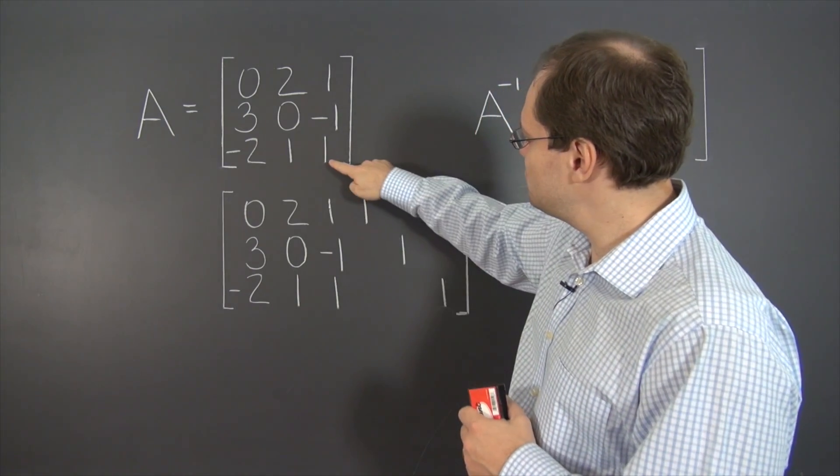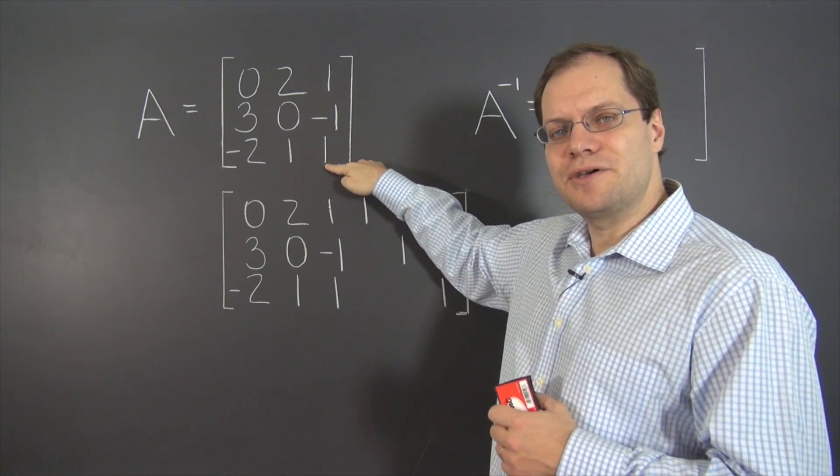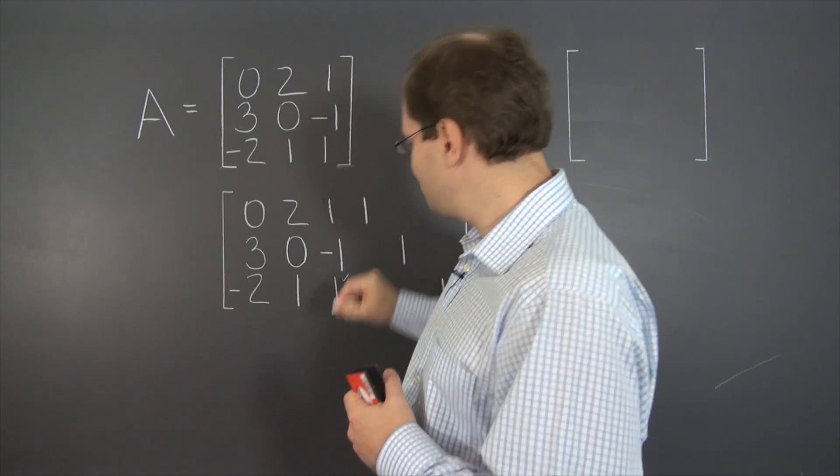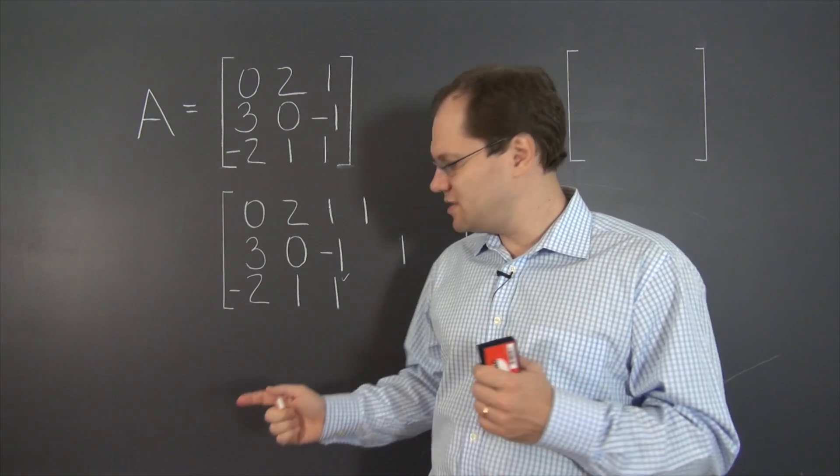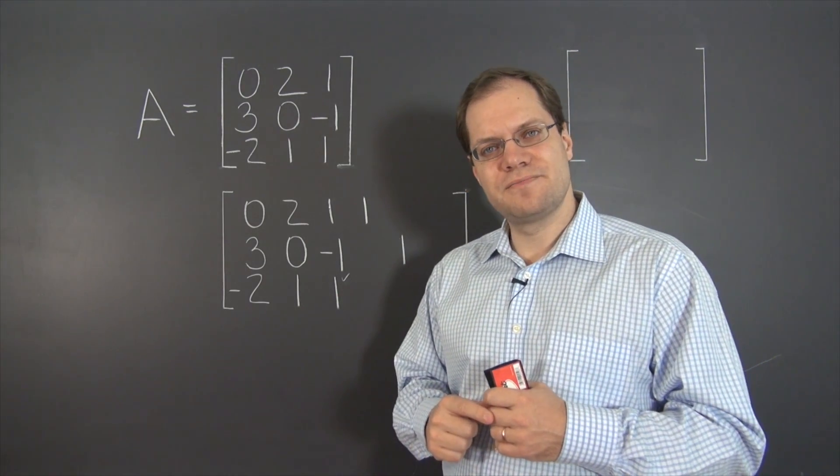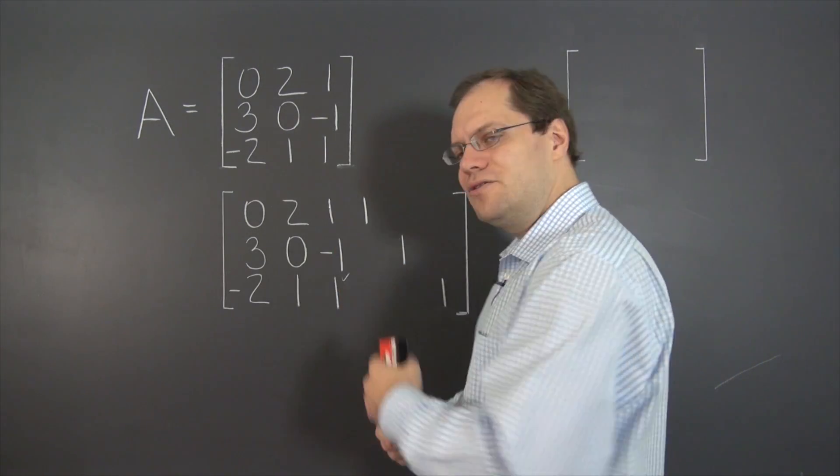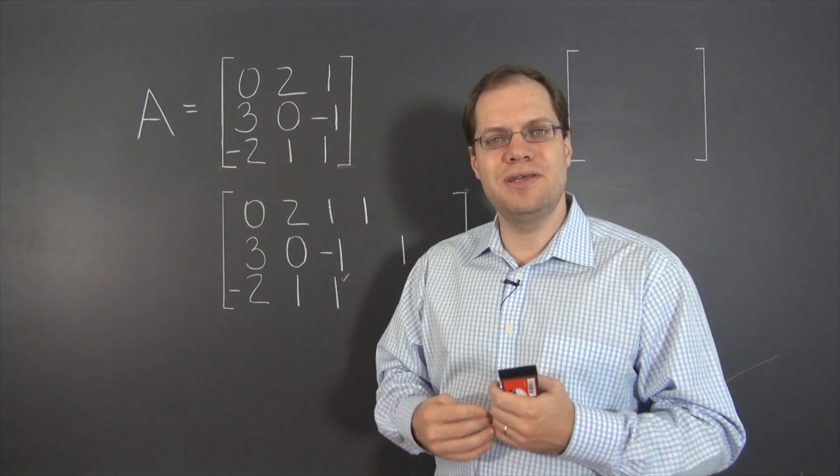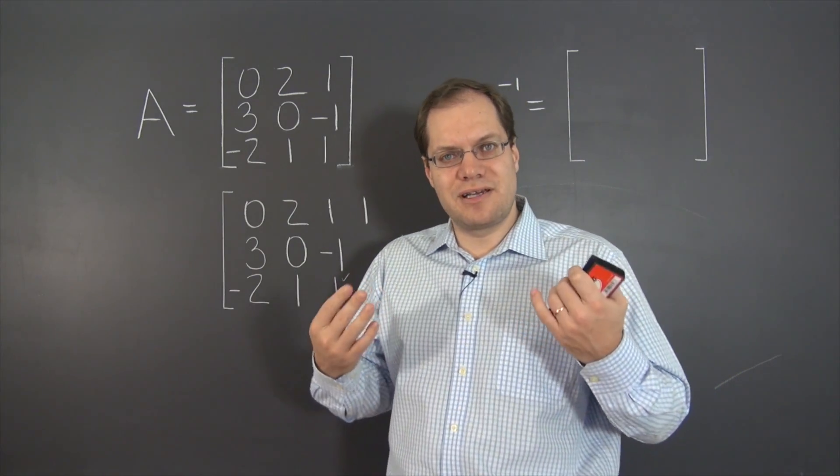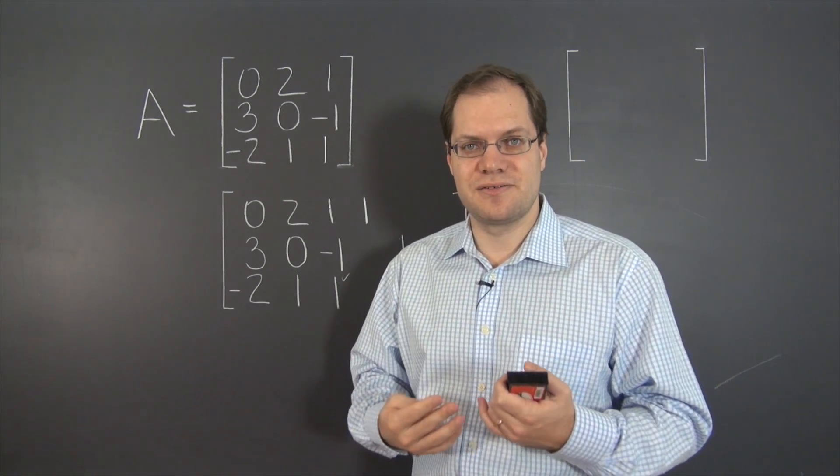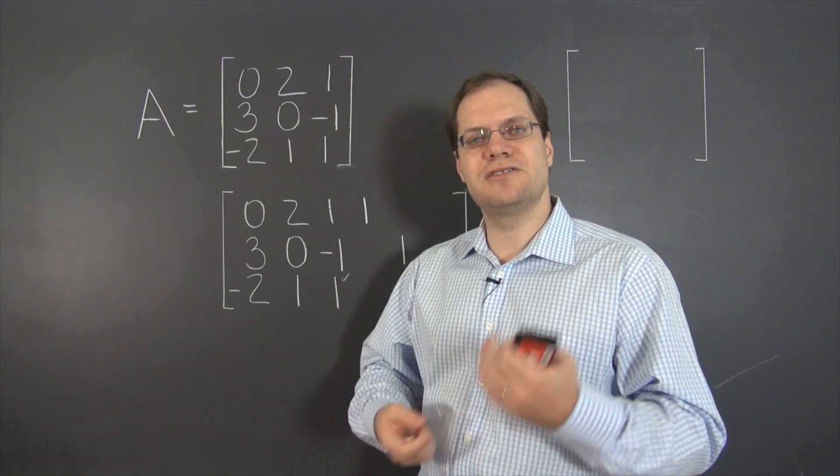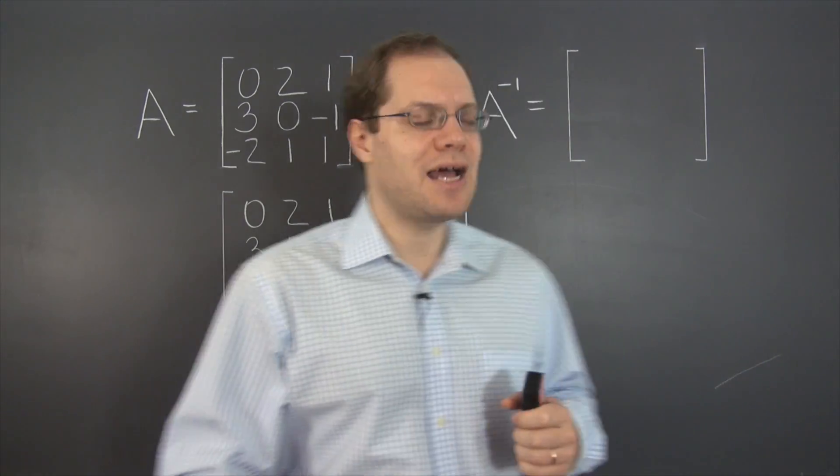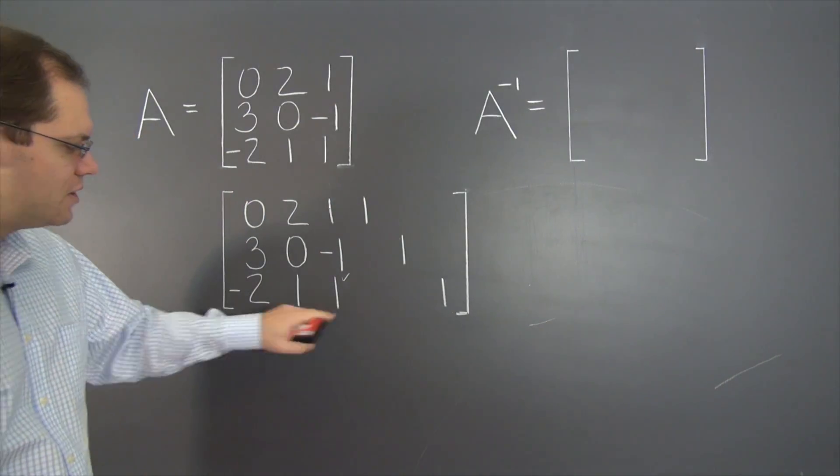So once again, you can be creative with the order. What would be a smart way to approach this matrix? Which entry would you use as the pivot first? I think that the one that comes out at you is this one, because it's already one and it's in the right spot. So this is a good first pivot. Let's use this one as our first pivot.